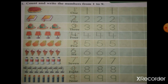There are 2 books. So write here 2. And what is the spelling of 2? T-W-O. 2. There are 3 bags. So write here 3. And what is the spelling of 3? T-H-R-E-E. 3.